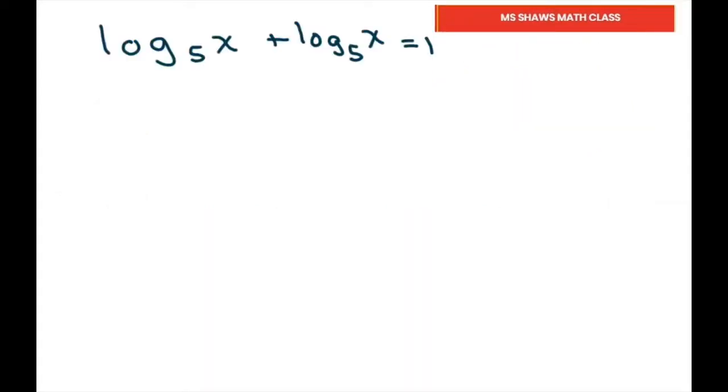For this problem, we'll change the base. That means we write log x divided by log 5 plus log x divided by... this is supposed to be a 3, not 5. So log x divided by log 3 equals 1.